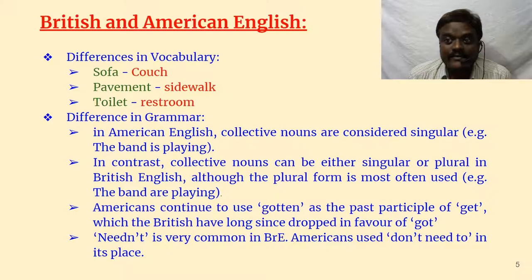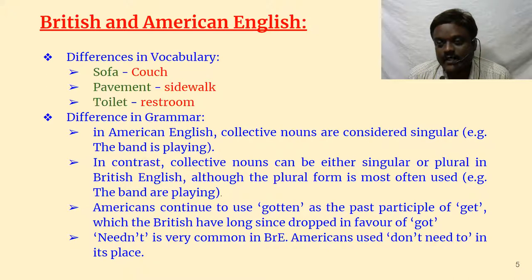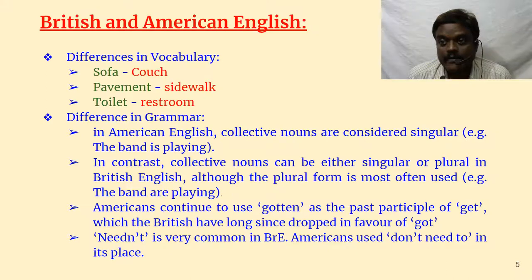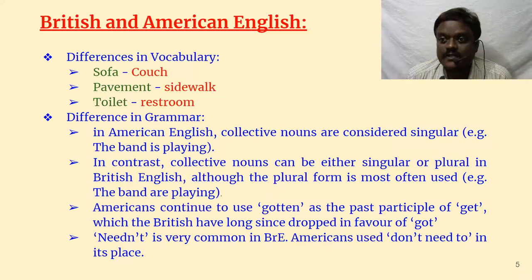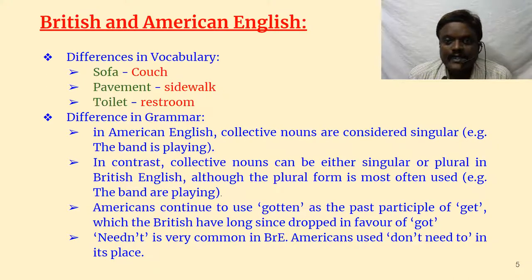Differences in grammar: language is very dynamic; it always keeps changing. Even in Telugu, if you watch 20-year-old black and white films, the language looks totally different from today's. That's what Noam Chomsky says — a main characteristic of language is that it keeps changing from time to time and from place to place. In American English, collective nouns are considered singular: 'the band is playing.' Whereas in British English, collective nouns can be either singular or plural, with the plural form most often used: 'the band are playing.'